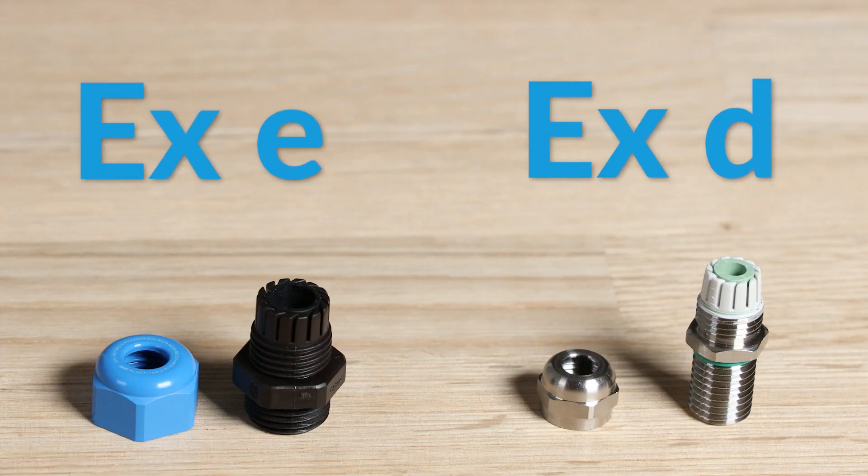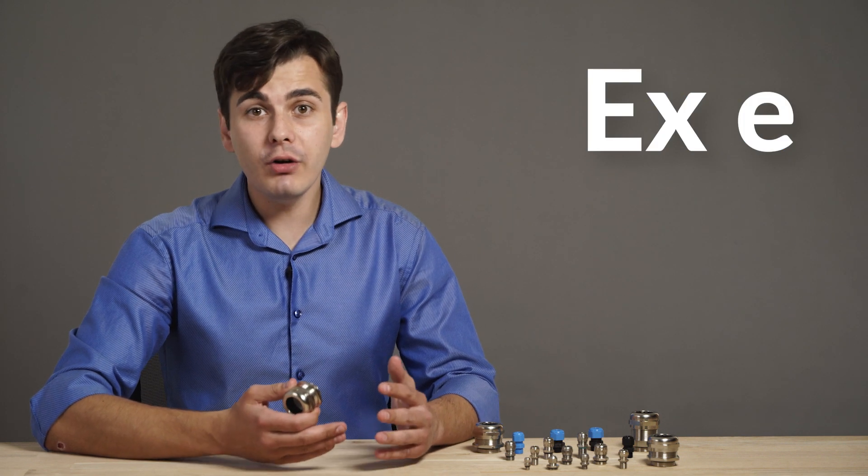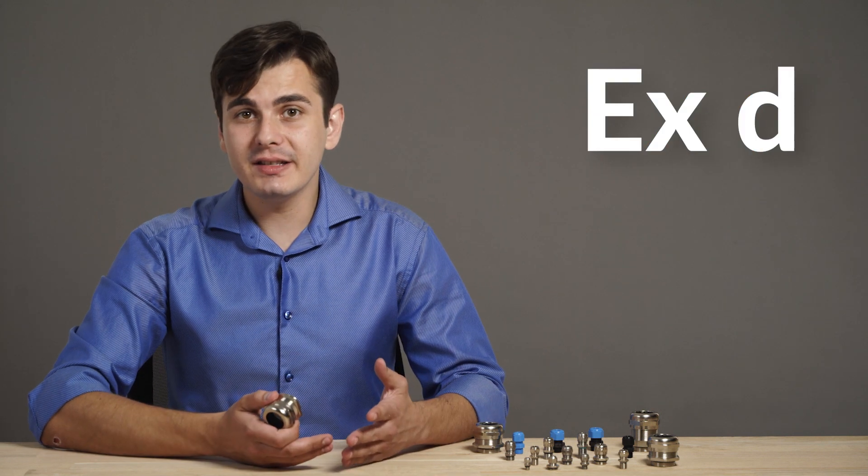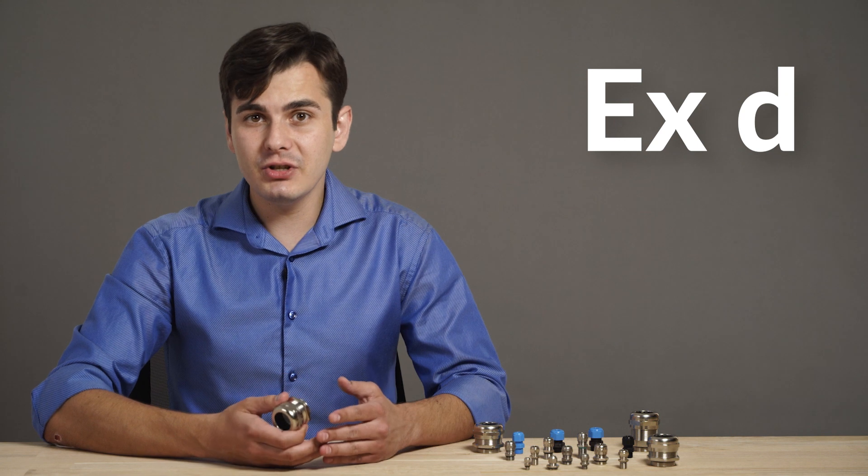Hummel cable glands are bolted connections with ignition protection XD and XE in accordance with ATEX directives. XE cable glands prevent the occurrence of sparks or arcs which could lead into explosion. XD cable glands can withstand the explosion pressure inside of the housing and prevent transmission to the outside.